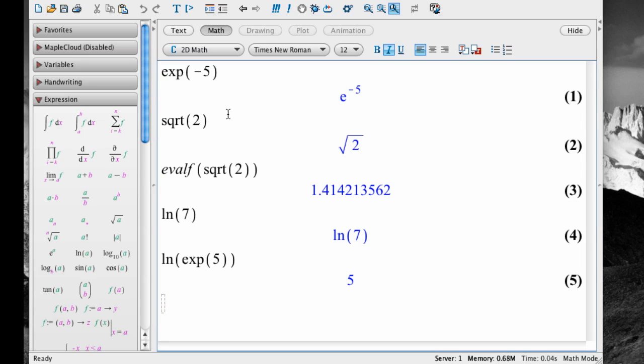To find a log to the base 10, use log10. For example, log base 10 of 0.01 is negative 2.